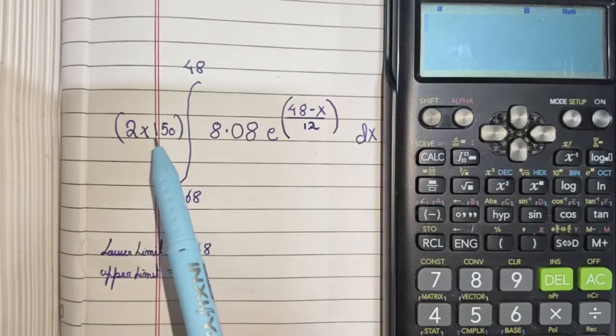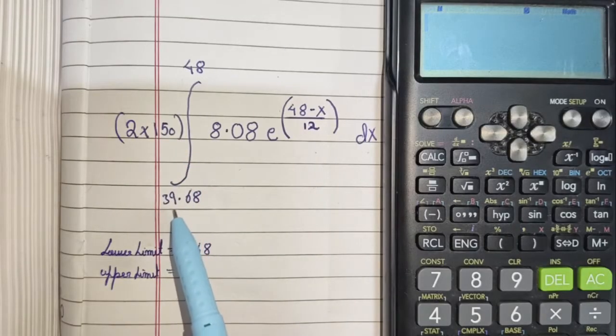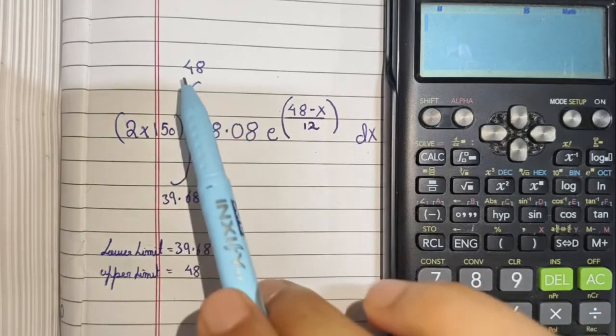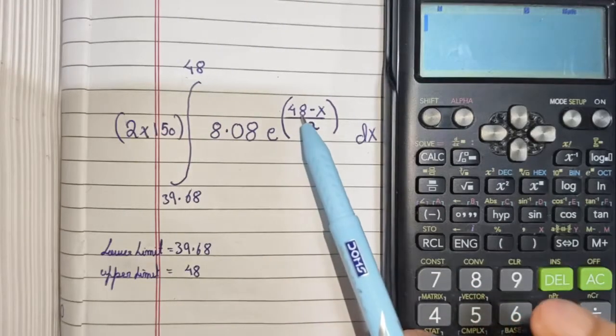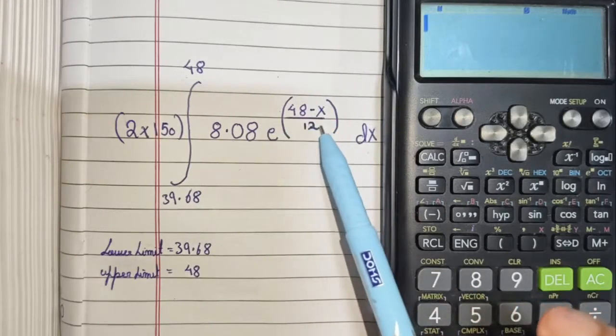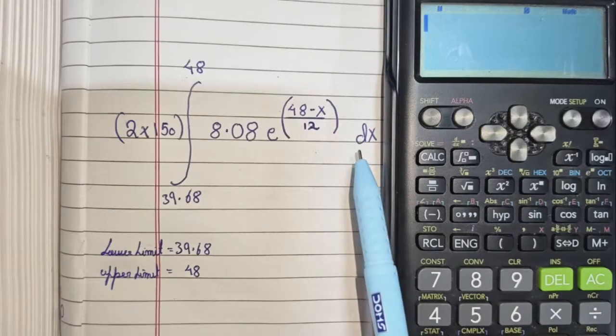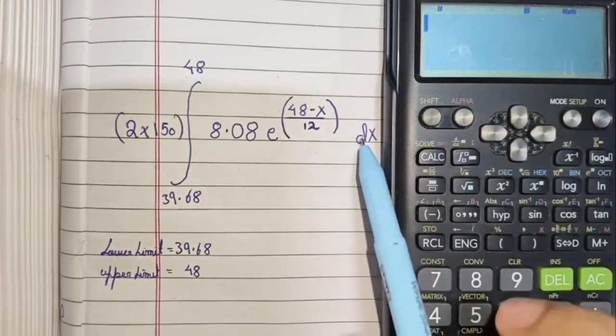So, it is 2 into 150, lower limit being 39.68, upper limit being 48, 8.08 e to the power 48 minus x divided by 12 dx, that is the integral of variable of integration.